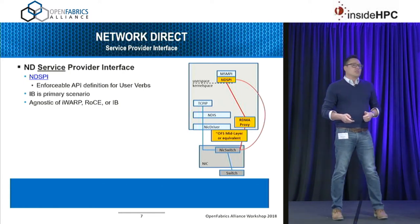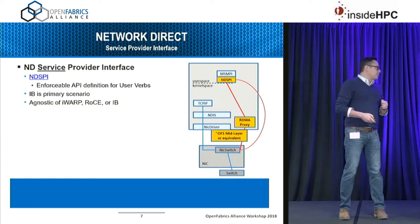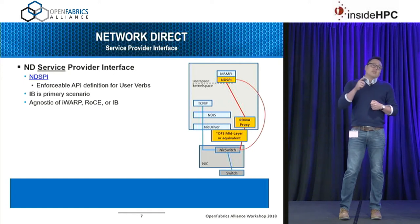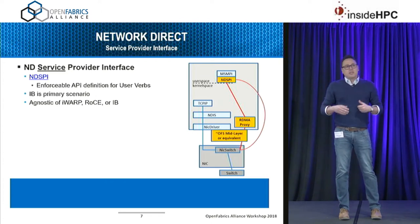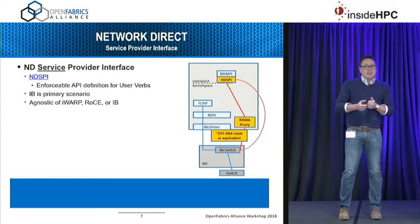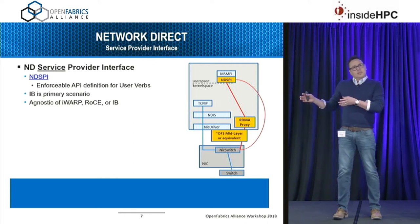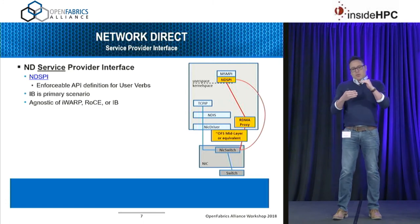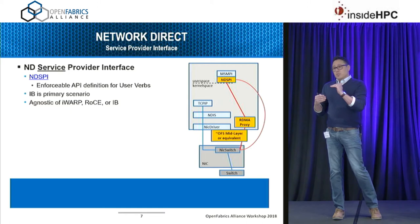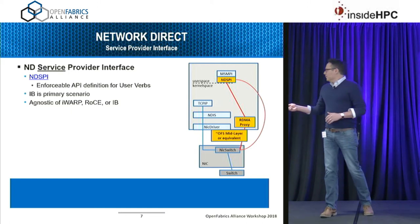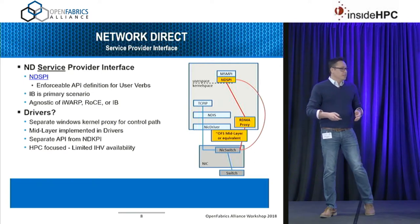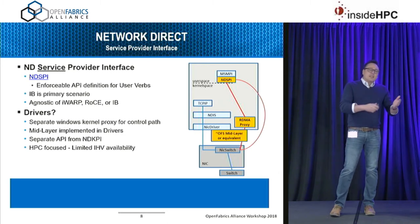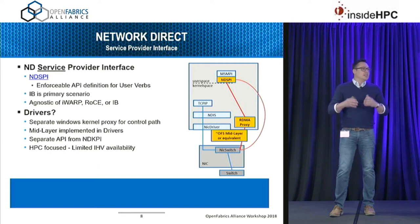For user space it's a different solution: NDSPI, Network Direct Service Provider Interface. One big difference from the standard Linux model is that in Linux, kernel verbs are basically a superset of your user space verbs — you do something in user space, it comes down into the kernel for control path. In Windows it's a separate proxy driver — a completely separate entry point for user space consumers, for historical reasons. There's also a smaller range of IHVs that support NDSPI, partly because it's slightly HPC/MPI focused.